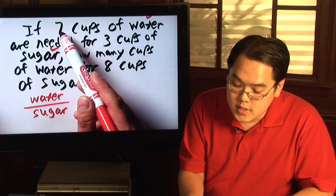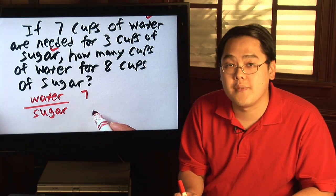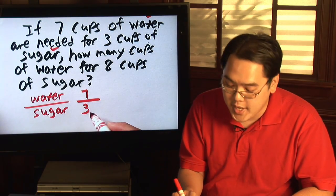Now, because seven cups of water, you will have seven in the numerator, and because you have three cups of sugar, you will have three in the denominator.